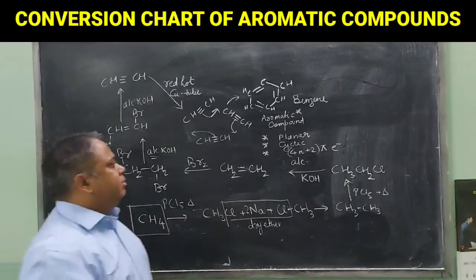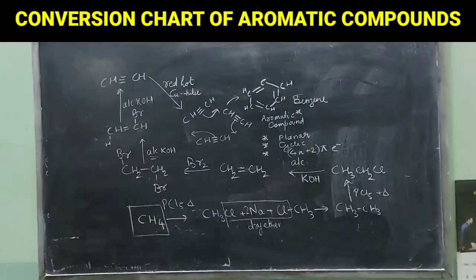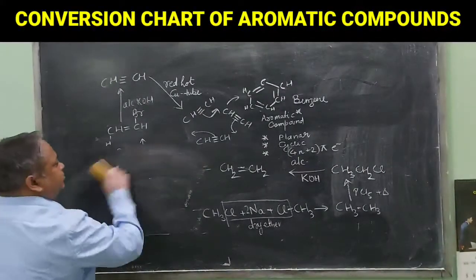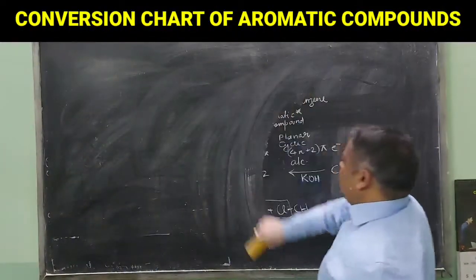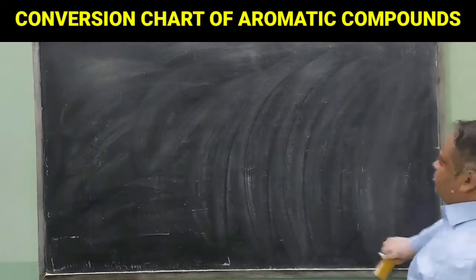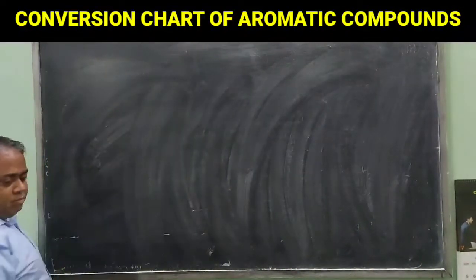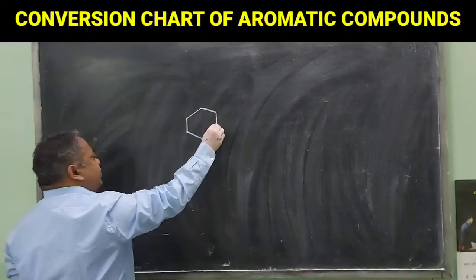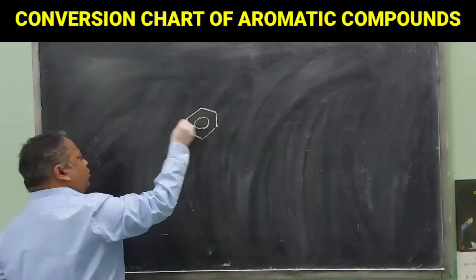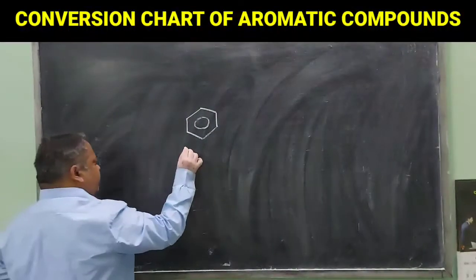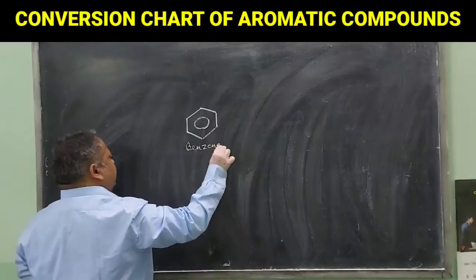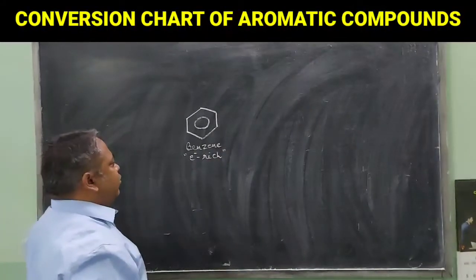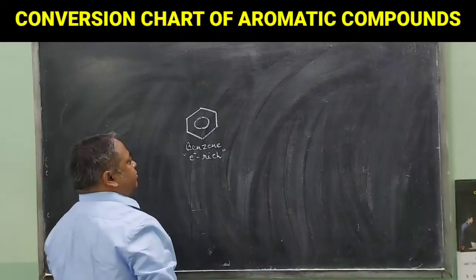We started with methane and we prepared benzene. Now from benzene we will see how the further conversions can be done. As we know, benzene ring contains electron cloud which is electron-rich. Benzene is electron-rich.